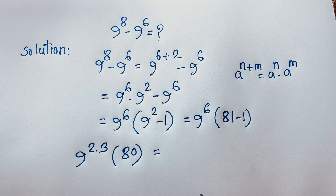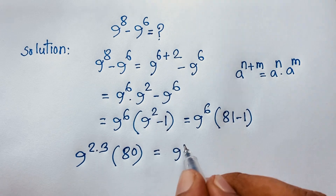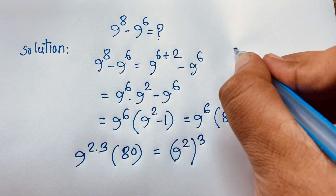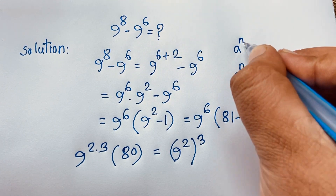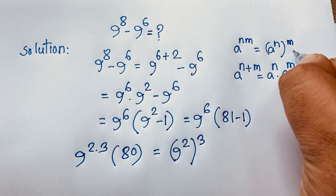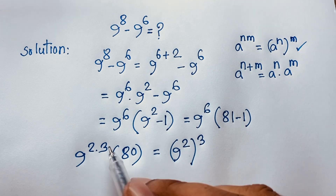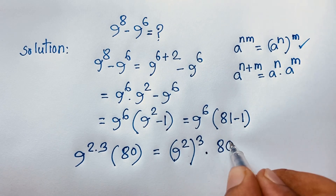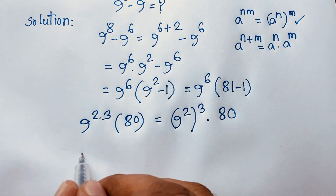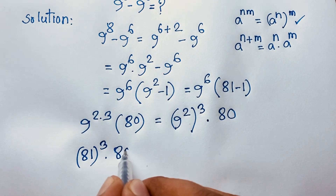Now using the exponential law — a to the power n times m equals (a to the power n) whole to the power m — we can write 9 to the power 2 times 3 as (9 to the power 2) to the power 3. Since 9 to the power 2 is 81, this becomes 81 to the power 3, times 80.